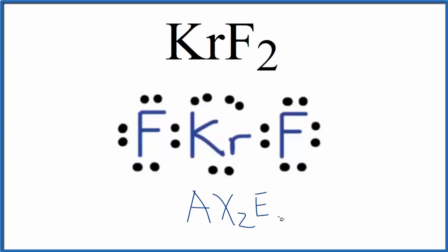So we have three lone pairs there. You either memorize that AX2E3 is a linear molecular geometry with a bond angle of 180, or if you're allowed, you look it up on a table for molecular geometries based on this AXE notation.